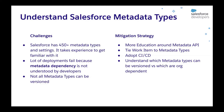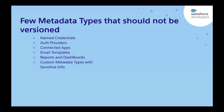Understand which metadata types can be versioned and which are dependent — you should have documentation listing metadata types in your organization that cannot be versioned and exist directly in production. Examples of metadata types that cannot be versioned include named credentials, auth providers, connected apps, email templates, reports, and dashboards. Some of these contain sensitive information like auth provider keys, so you should not put them in your Git repo as that would expose your secret information.